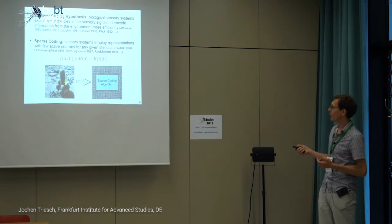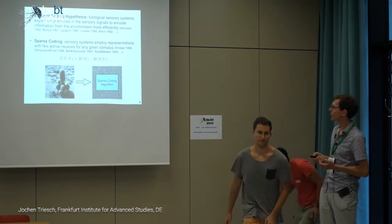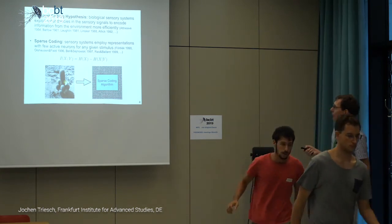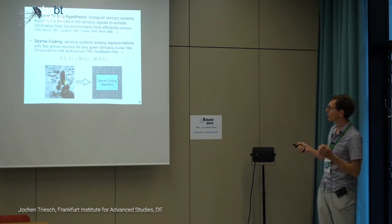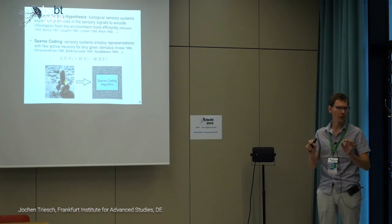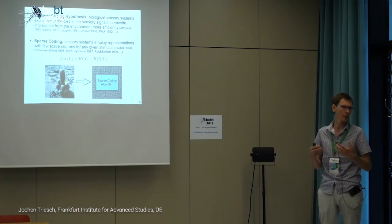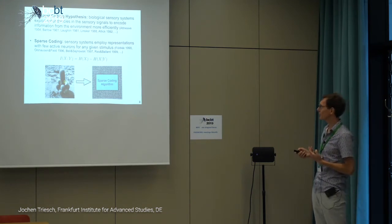A modern variant of these ideas is sparse coding algorithms, where the idea is that we want to learn representations where for any particular thing we want to encode, we only want to have a few neurons active so we can save energy, because energy efficiency is a big issue for the brain.